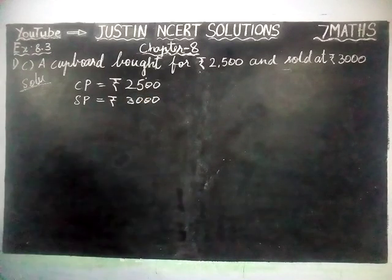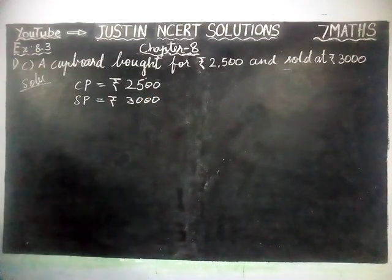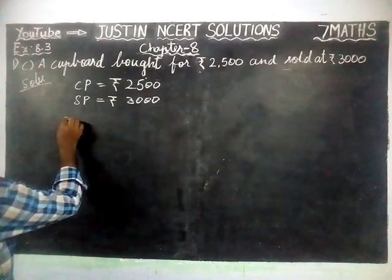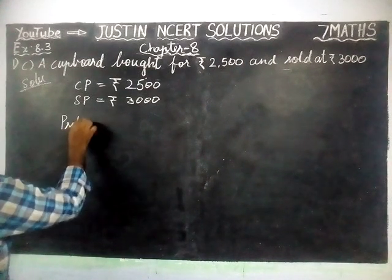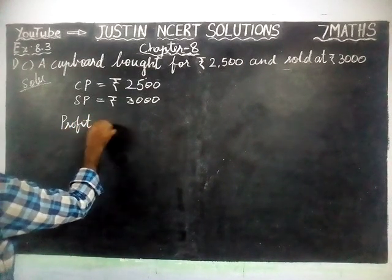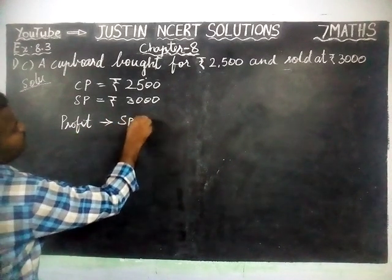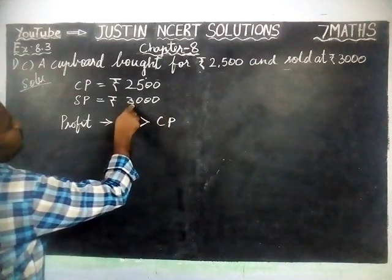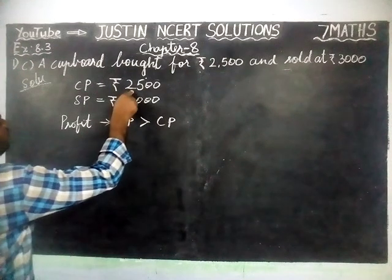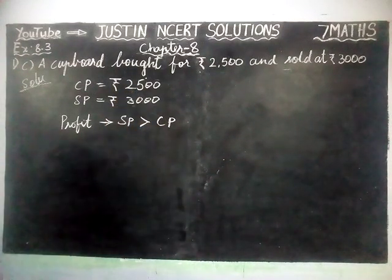If it is profit, the sale price should be higher than the cost price. We will check it. Sale price greater than cost price: 3000 is greater than 2500. So, sale price is greater than cost price.